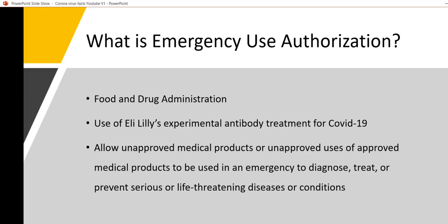What is emergency use authorization? This is a special power given to the Food and Drug Administration (FDA). This provision has been used for approval of experimental antibody treatments for COVID-19. Emergency use authorization allows the FDA to permit unapproved medical products, or unapproved uses of approved medical products, to be used in an emergency to diagnose, treat, or prevent serious or life-threatening diseases or conditions.